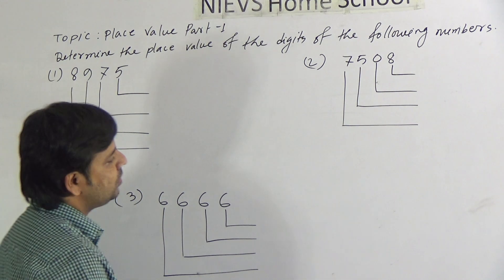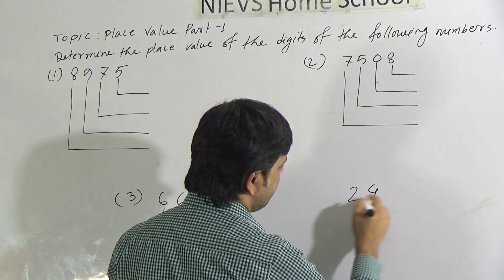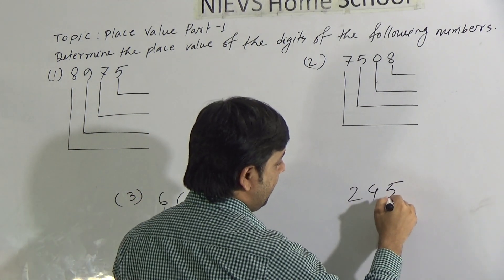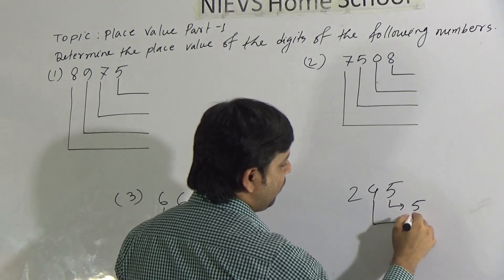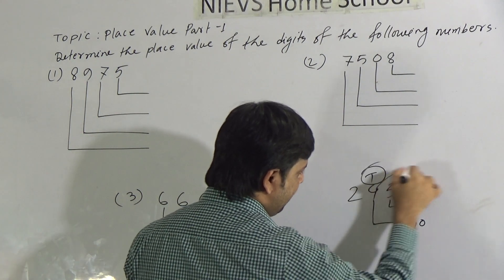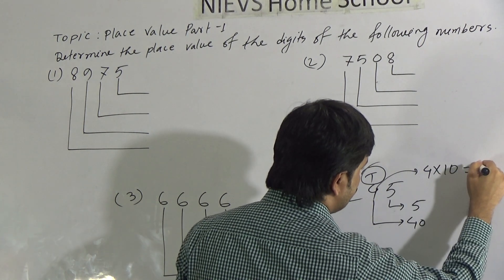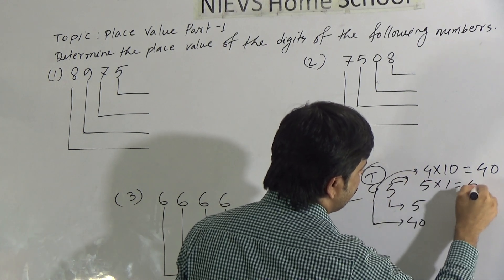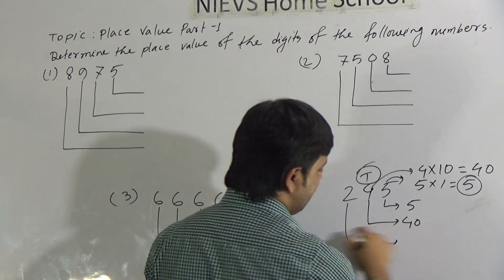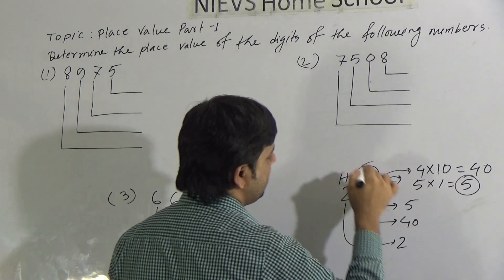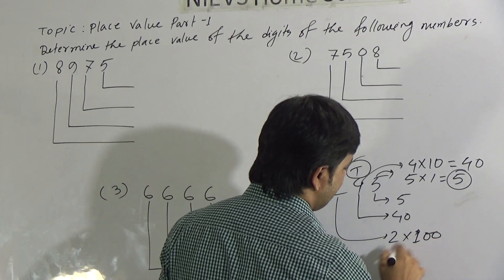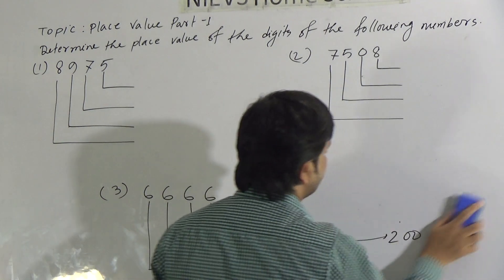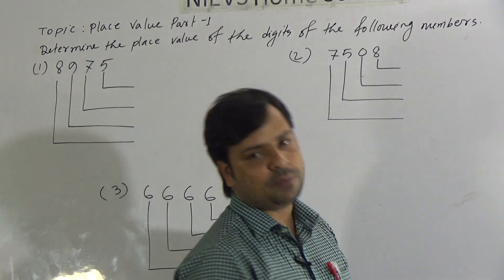Place Value means the value of a digit in a number according to its position is known as Place Value. Suppose if I write a number 245, here 4 is a digit, 2 is another digit, 5 is also another digit. The value of 5 is 5, and the value of 4 is 40, as 4 is in the 10s position. If we multiply 5 by 1, we get 5. And 2 is in the 100s position, so we multiply 2 by 100 to get 200. So if we multiply a digit by its position, we get the Place Value of that digit in the number.